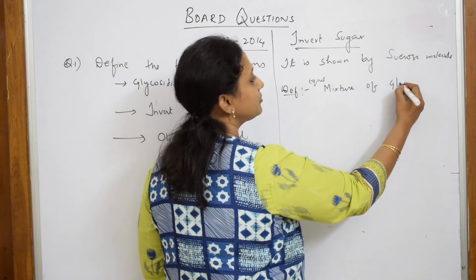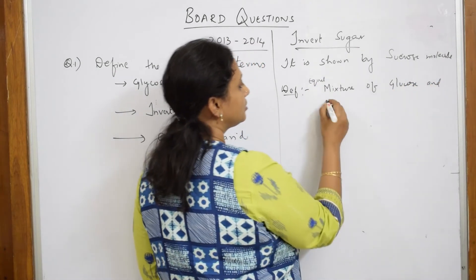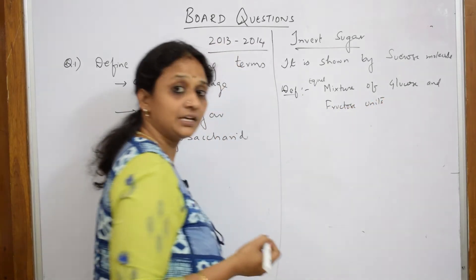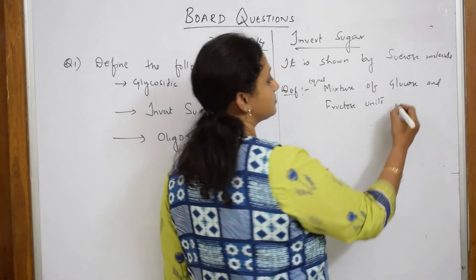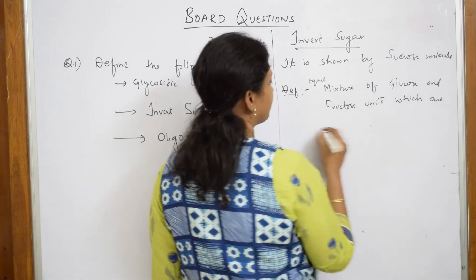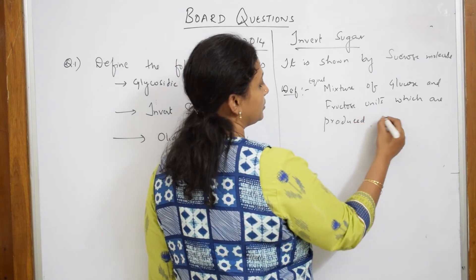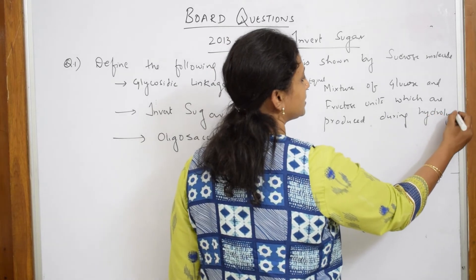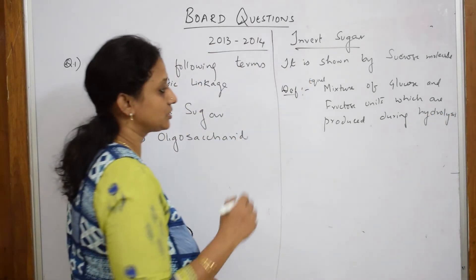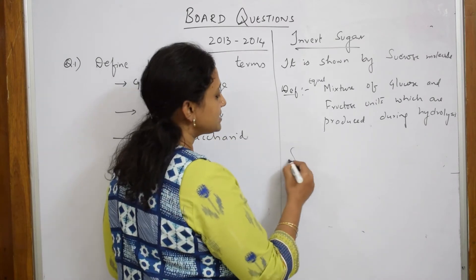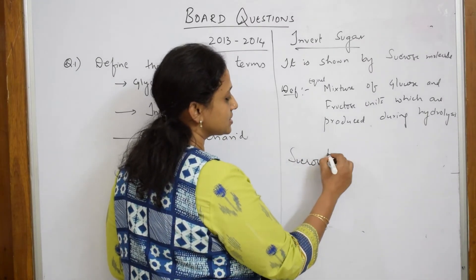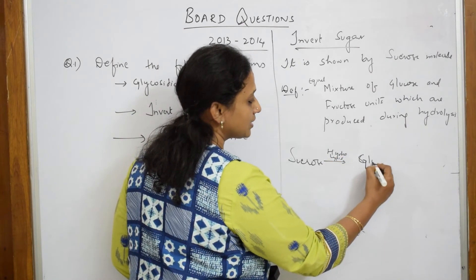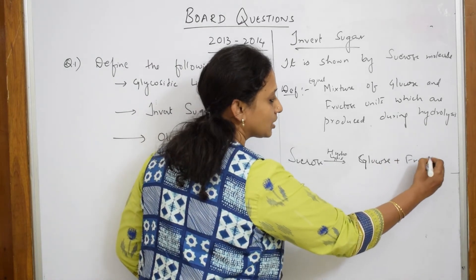Now let us write the definition. Invert sugar is an equal mixture of glucose and fructose units which are produced during hydrolysis. Now, why do we call this invert sugar? Sucrose on hydrolysis is going to form two products: glucose and fructose.